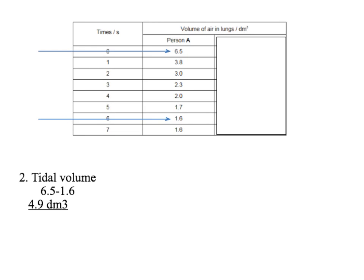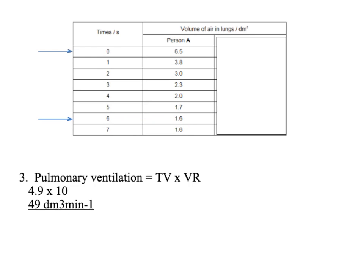Next, we work out the tidal volume — the volume exhaled or inhaled per breath. The maximum volume in the lungs minus the minimum: 6.5 minus 1.6 gives 4.9 decimetres cubed. So the pulmonary ventilation is tidal volume times ventilation rate: 4.9 times 10 equals 49 decimetres cubed per minute.